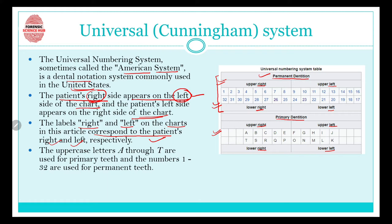In the Cunningham system, both alphabets and numbers are used. For permanent dentition, numbers are used, and for primary dentition, alphabets are used. The uppercase alphabets A through T are used for primary dentition. For permanent dentition, numbers ranging from 1 to 32 are used, and the numbering starts from the upper right corner of the chart.